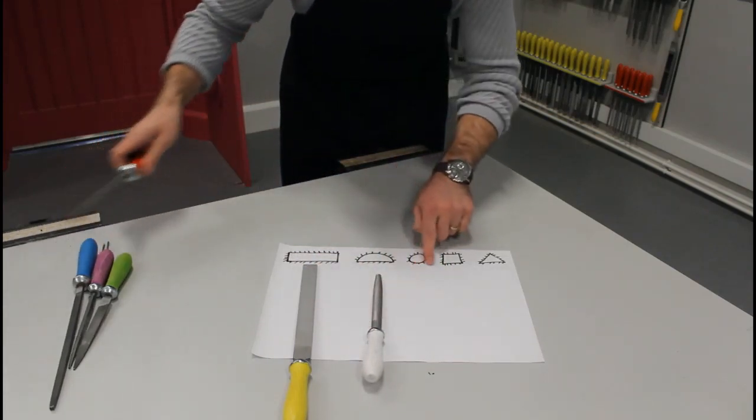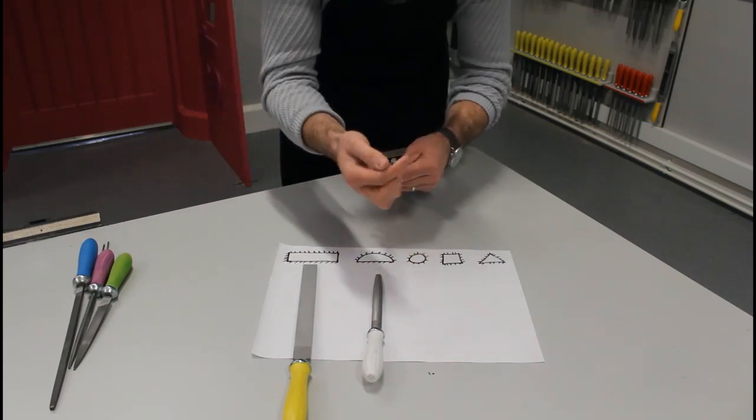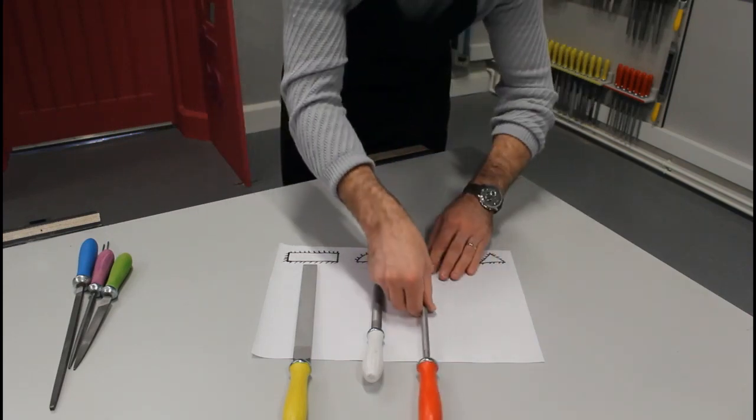Our next one is completely circular, so it's our round file. That's our round file there.